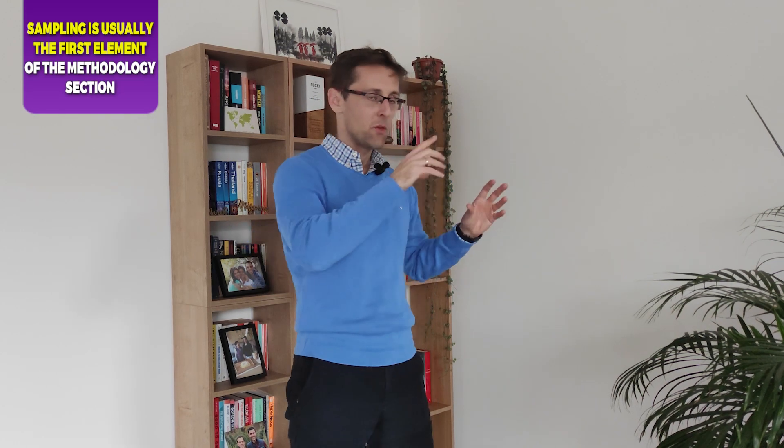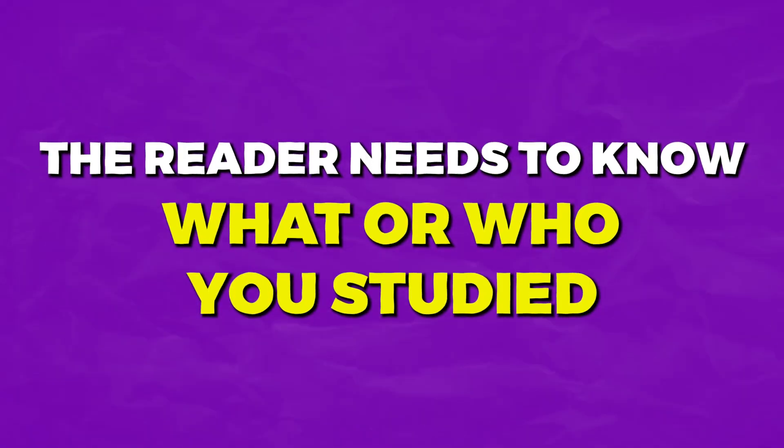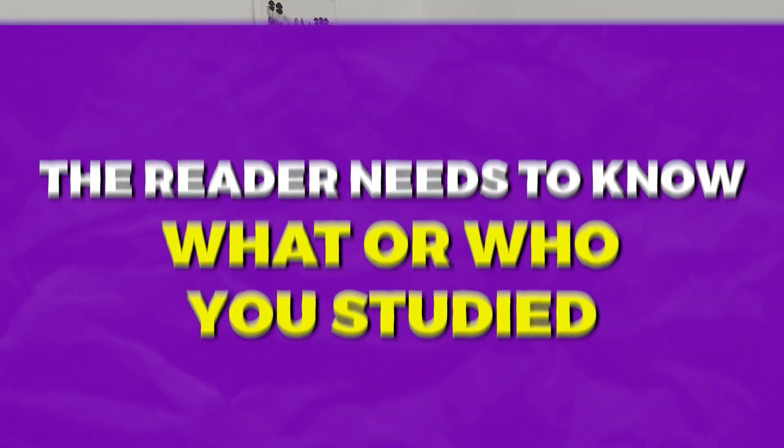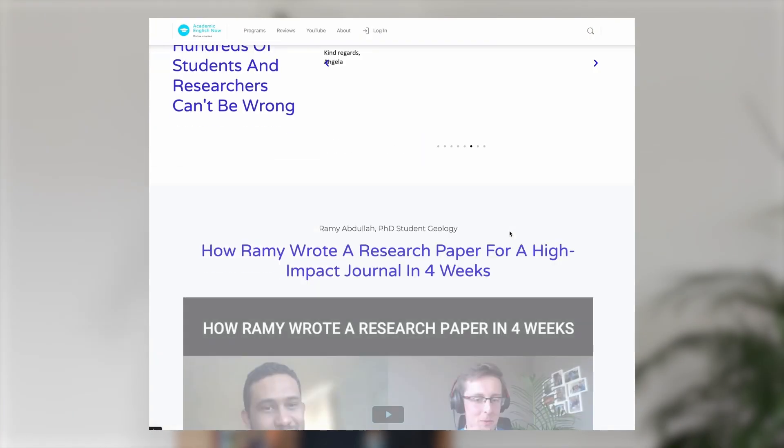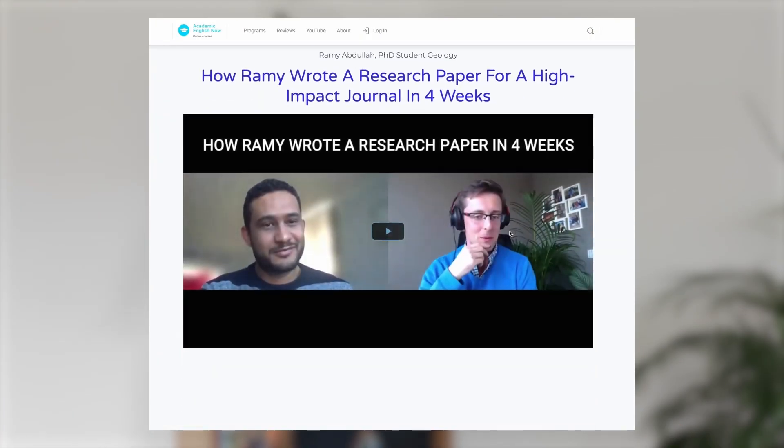This is usually the first element of the methodology section, and it's really important because the reader needs to know what or who you studied before we can tell them how you studied it, how you analyzed the data, or present the results. My name is Marek Kiszkowek and I run Academic English Now, where I help PhD students and researchers regularly publish research papers in top journals. This first element can often be called 'sample and sampling techniques,' 'participants,' or sometimes a more descriptive title.